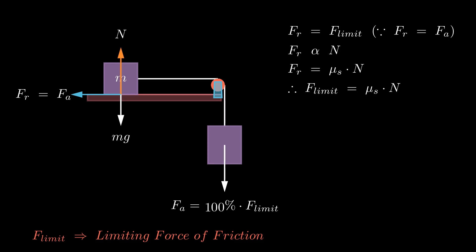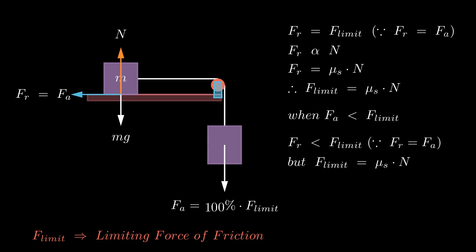Finally, we can express the limiting force of friction as shown on the screen. However, if the applied force is less than the limiting frictional force, the frictional force is correspondingly less than the limiting frictional force. The limiting frictional force is equal to the product of the coefficient of static friction and the normal force. In simpler terms, the object will remain stationary as long as the frictional force remains less than the product of the coefficient of static friction and the normal force. This is an essential condition to remember when tackling problems related to static frictional force.